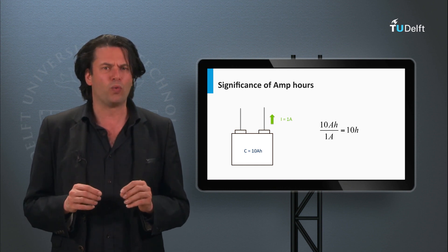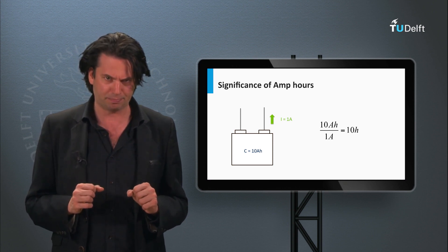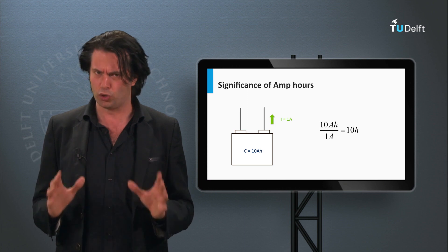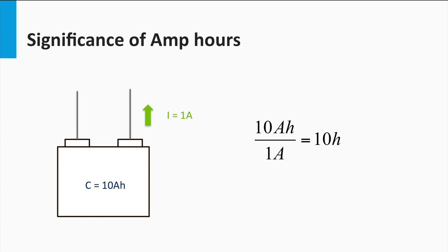You must be wondering what is the significance of amp-hours as the unit of battery capacity. The unit itself gives us some important clues about the battery properties. If we take a brand new battery with a 10 amp-hour capacity, it can theoretically deliver a 1 amp current for 10 hours at room temperature. Of course, in practice this is seldom the case due to several factors, as we will see later.